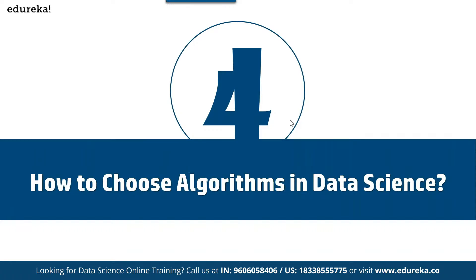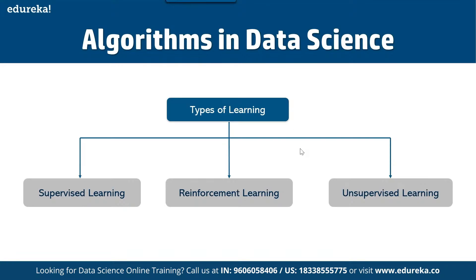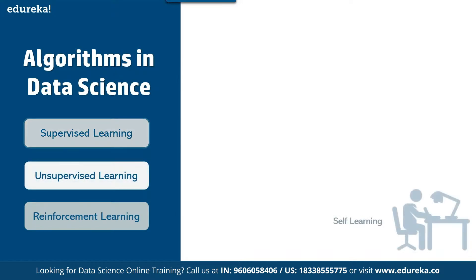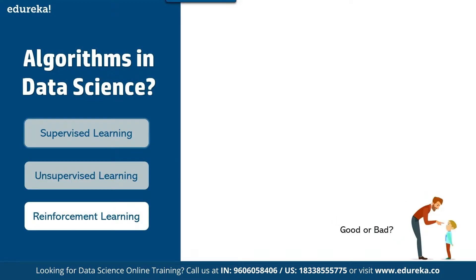Now talking about how to choose algorithms in data science — we have three types: supervised learning, reinforcement learning, and unsupervised learning. Supervised learning is a type of machine learning algorithm which uses a known dataset, like a training dataset, to make predictions — like a teacher who has known data to program the system. Unsupervised learning draws inferences from datasets without labeled responses — like kids taking decisions from their own understanding. Reinforcement learning is an area of machine learning concerned with how software agents take decisions based on past experience, and feedback is given at the end of an action on whether it was correct or not.